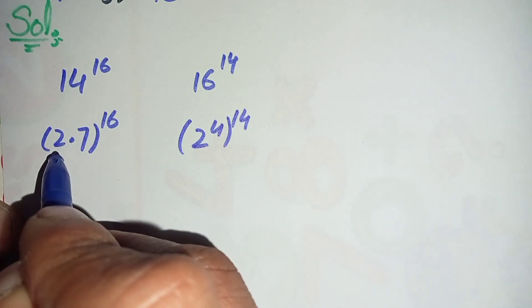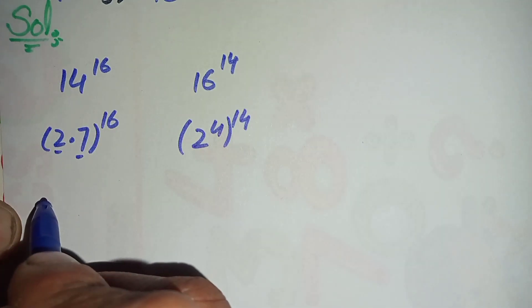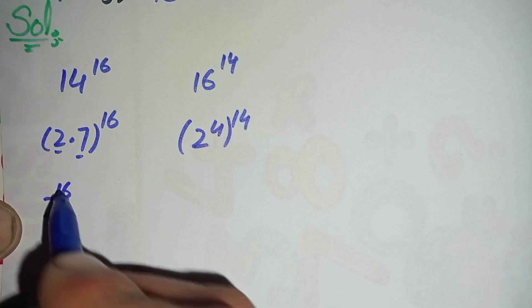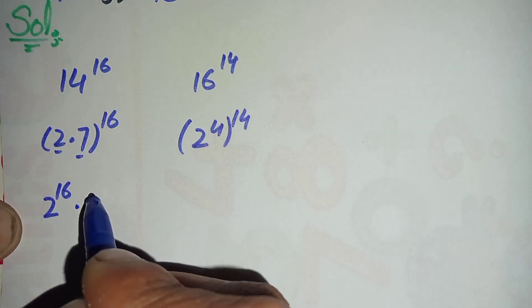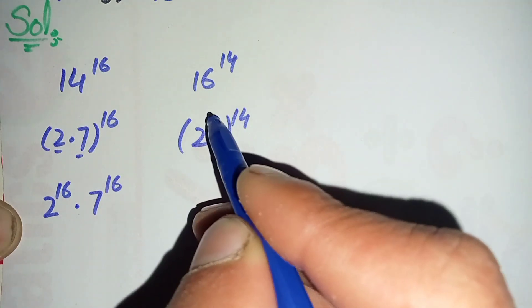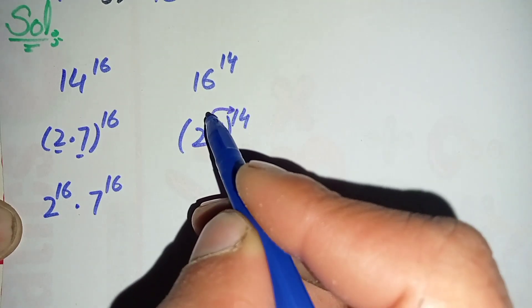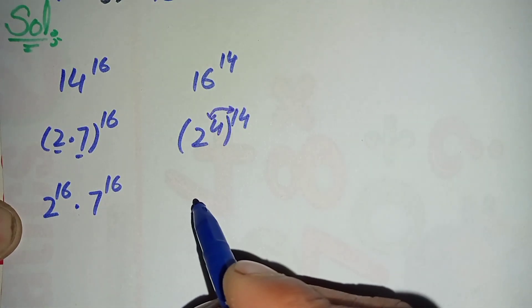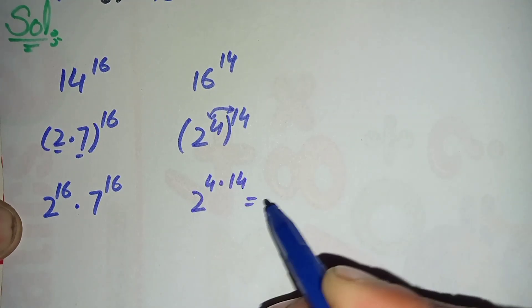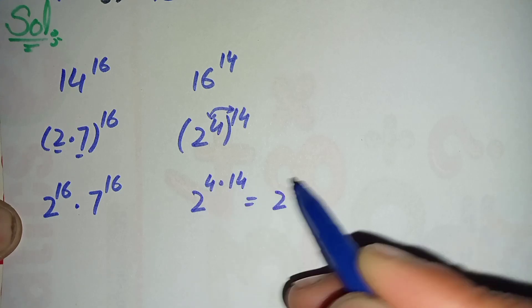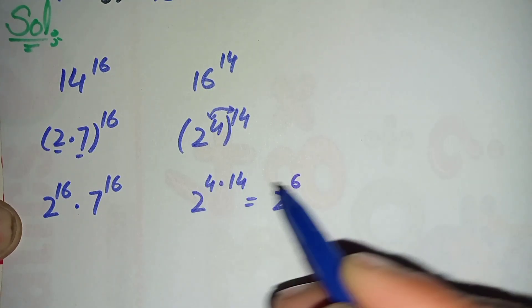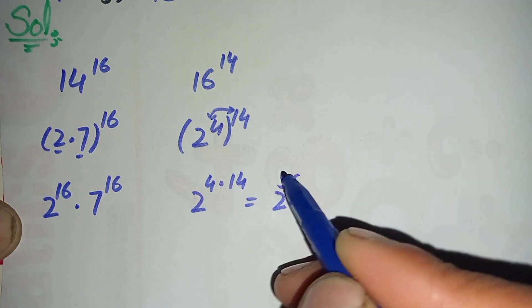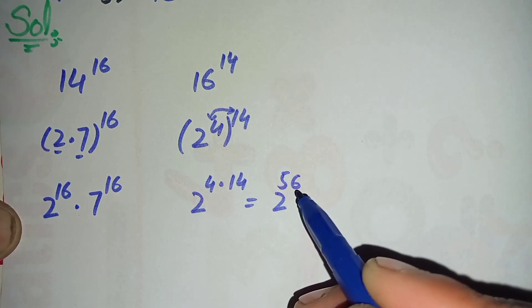In the next step, we will split this power over these two numbers, so this becomes 2 raised to power 16 times 7 raised to power 16. And here we multiply the two powers together: 2 raised to power 4 times 14 gives us 2 raised to power 56.